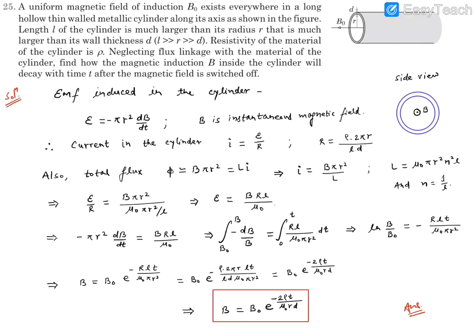Hello, here is question number 25. A uniform magnetic field of induction B₀ exists everywhere in a long hollow thin-walled metallic cylinder along its axis as shown in the figure. Length L of the cylinder is much larger than the radius r, which is much larger than its wall thickness d. Resistivity of this material is ρ.